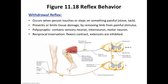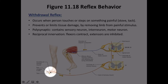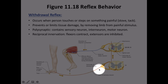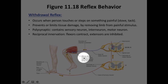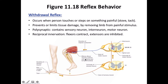The withdrawal reflex is polysynaptic, containing a sensory neuron to sense the pain, an interneuron shown in red, and then a motor neuron reaching the effector. This is the withdrawal reflex.